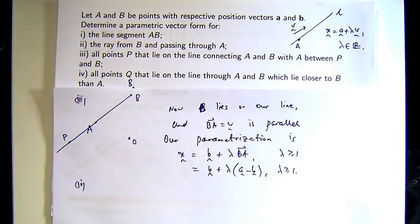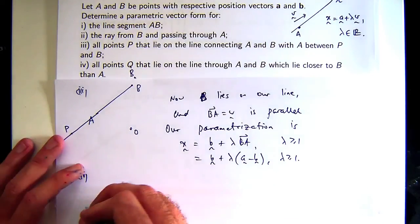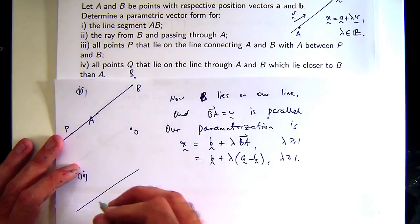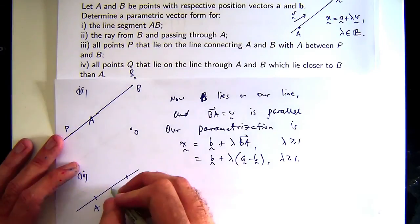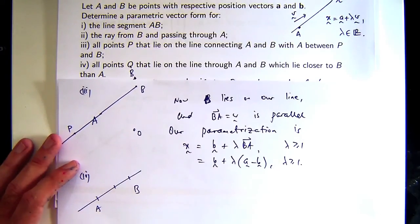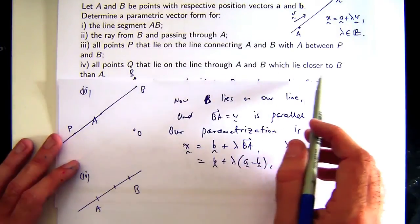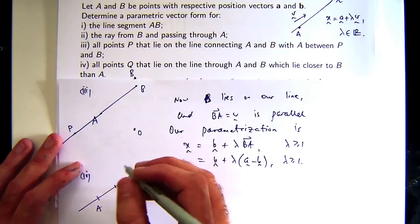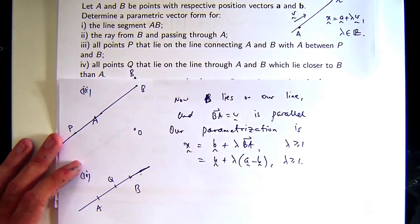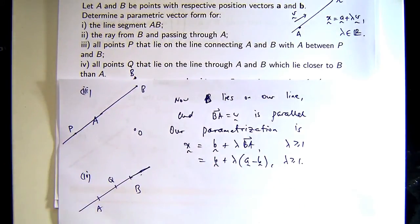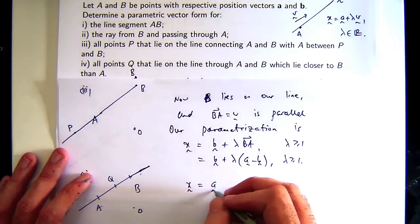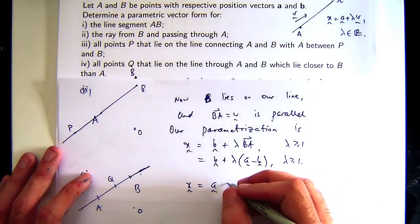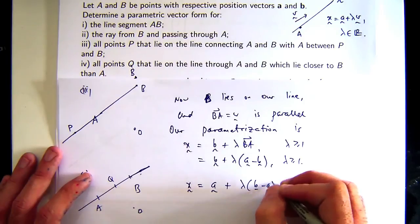Here we're asked to describe all points Q that lie on the line through A and B which lie closer to B than A. So let's just draw in the line. You've got A here, B here, and you want the points that lie closer to B than A. So again, it's just using your form and then thinking about how we can control the lambda.